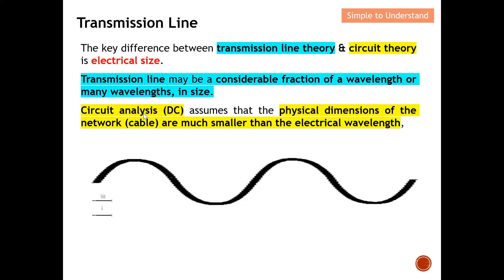Next, let's move on to circuit analysis. For circuit analysis, we typically mean DC, which also means very low frequency. The physical dimension of the network is much smaller than the electrical wavelength. As frequency decreases, wavelength increases. So instead of a transmission line, we call this a cable. This cable is much shorter compared to the wavelength.